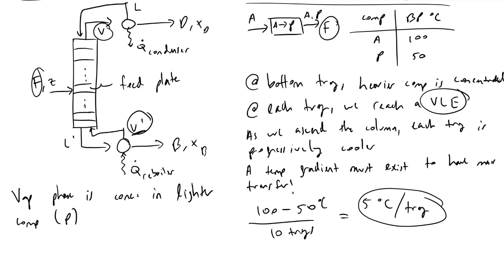We can divert some of the liquid back down the column to get better performance. Mathematical models tell us what ratio to use for sending that liquid back down — this is called the reflux ratio, and it is one of the key parameters that chemical engineers adjust in practice. Other videos discuss reflux ratio in more detail, but that is beyond this introduction.